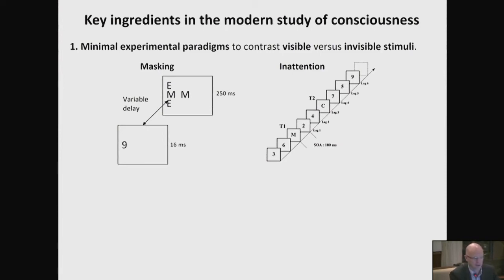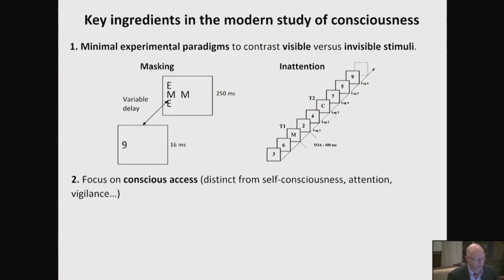This is essentially the strategy used to study consciousness: to pick illusions of this kind. We've used a lot of masking, where you flash a shape and if you follow it by another set of shapes — like letters — they mask the initial digit. Or inattention, where you distract the subject temporarily. If you attend to a first letter in a stream, you are unable to see the second one — it's called attentional blink. With these paradigms, you can make something conscious or unconscious at will. These paradigms really focus on conscious access — a minimal version of consciousness.